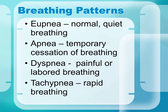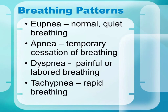Terminology you need to know: eupnea is normal or quiet breathing — people with healthy lungs will have eupnea. Apnea is a temporary stoppage of breathing. Dyspnea is painful, labored, or difficult breathing. And tachypnea is rapid breathing — the prefix tachy means rapid, and pnea means breathing.